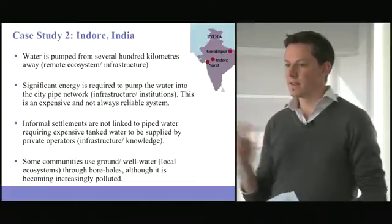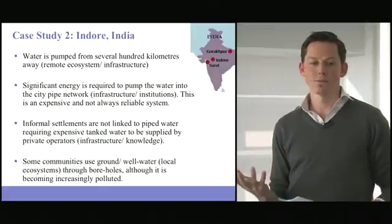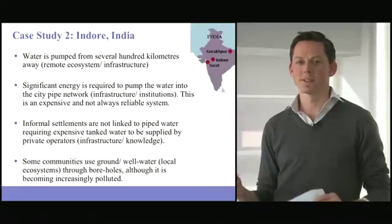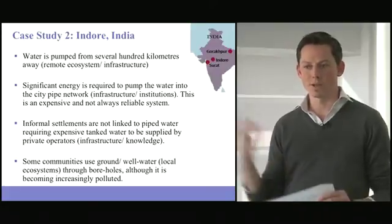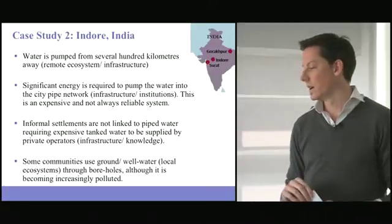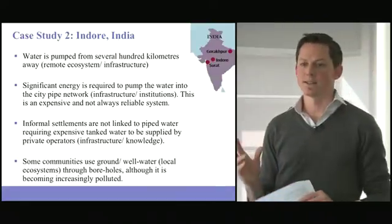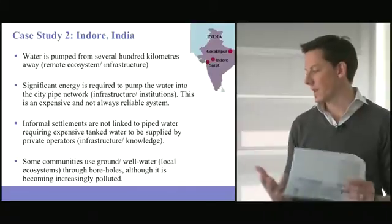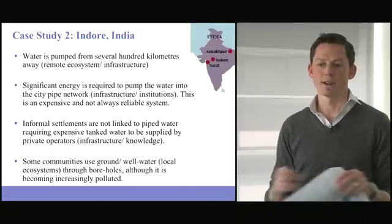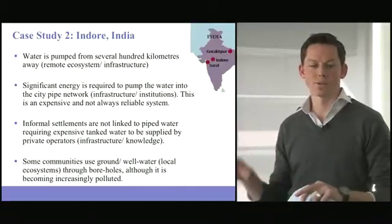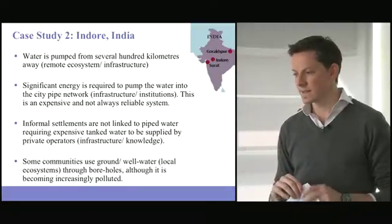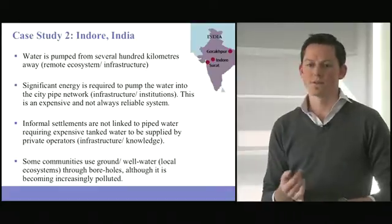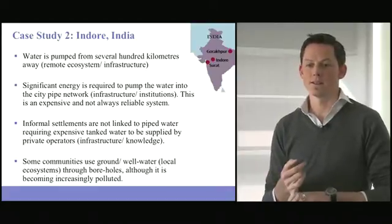So on the other side, within the city, the informal settlements are not linked to this piped water. So while a majority of the residents of the city can turn a tap and receive their water when the system's working, informal settlements have no access to this. So how do they access their water? So you've got things like tanked water markets, private operators going out to different sources of water and bringing that in.